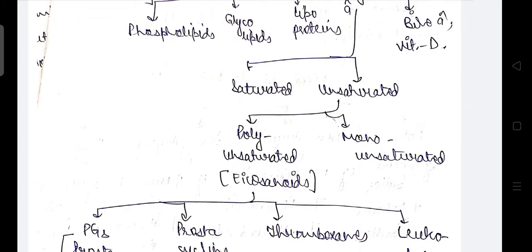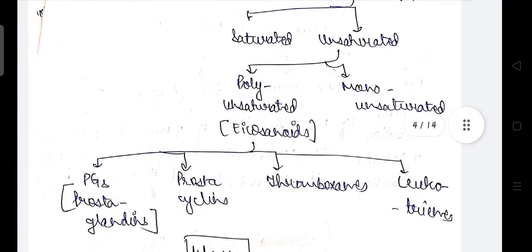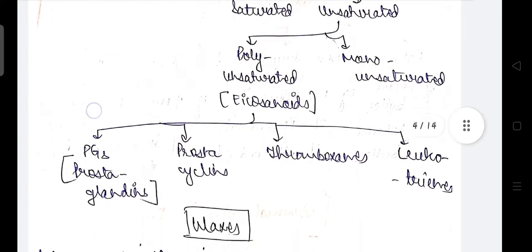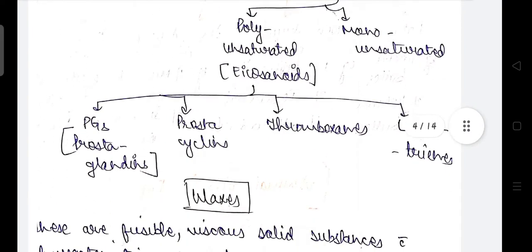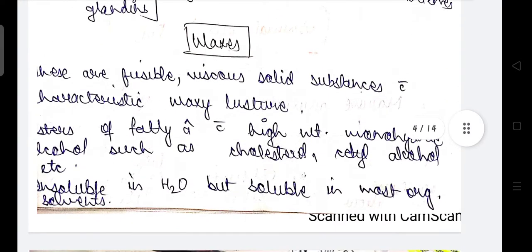Unsaturated fatty acids are further divided into polyunsaturated, that is eicosanoids, and monounsaturated. Eicosanoids are further divided into five categories: prostaglandins, prostacyclins, thromboxanes, and leukotrienes.